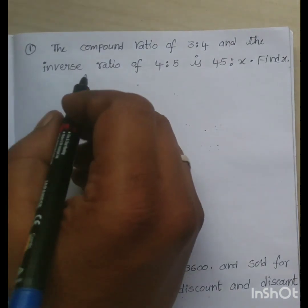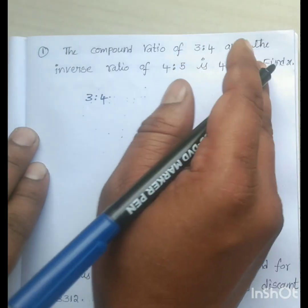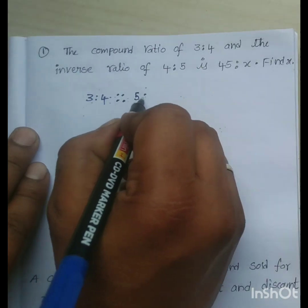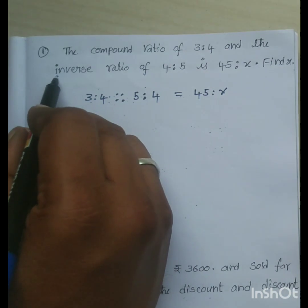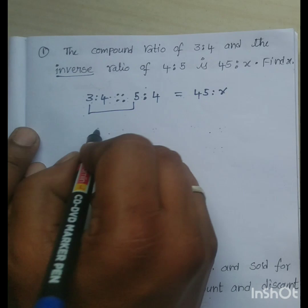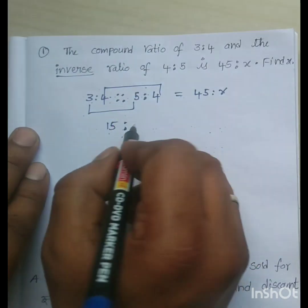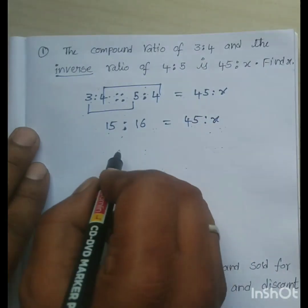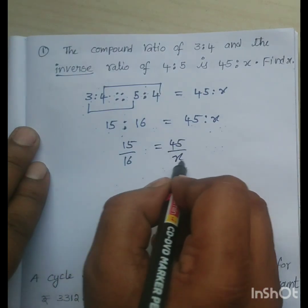Now, coming to third question, the compound ratio of 3 is to 4 and the inverse ratio of 4 is to 5. Inverse ratio of 4 is to 5 is 5 is to 4 is 45 is to X. You have to look at this statement, inverse ratio of 4 is to 5 is 5 is to 4. Now, again, product of antecedents, 3 and 5 is 15 is to product of consequences, 4 and 4 is 16 is equal to 45 is to X. 15 by 16 is equal to 45 divided by X.